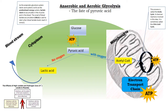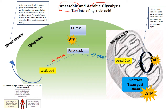Hey Year 12s, I just wanted to quickly go through some stuff today that we covered in class, just so we don't forget anything because this is really important. So right here we're looking at anaerobic and aerobic glycolysis. The fate of the pyruvic acid determines whether we call it anaerobic glycolysis — when there's not enough oxygen present — or aerobic glycolysis, when we are getting sufficient oxygen.